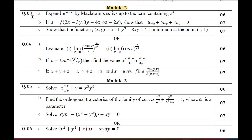Moving on to Module 2 — Questions 3 and 4. Question Number 3A: expand the function e^(sin x) using Maclaurin series up to the term containing x⁴. Question Number 3B: given u as a function, use partial differentiation to show that 6ux + 4uy + 3uz = 0. Question Number 3C: show that the function f(x, y) is minimum at the point (1, 1).